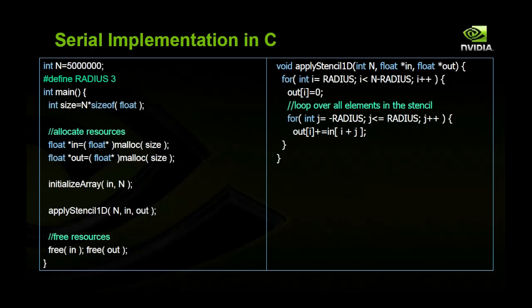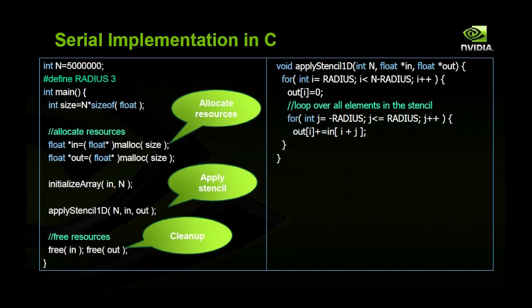So that is the serial algorithm. And let's look at what that code looks like. So in C, what we have here is we have, first in our main program, we're going to allocate some resources. And so when we allocate those just using malloc, or you could use new if you're using C++. And then at some point we get data into our arrays. So here I'm just calling this function initializeArray. But this could be any function that you have to put data into these arrays. And then we call a function apply stencil1d. And that function is defined on the right. Finally, we free the resources that we've allocated.